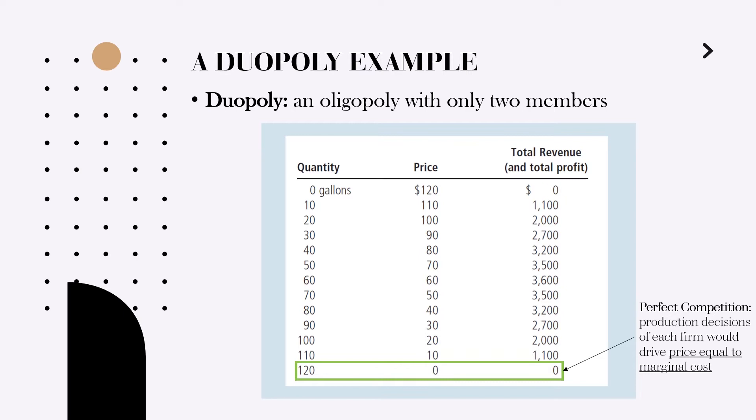In case of perfect competition, production decisions of each firm would drive price equal to marginal cost, and if the price is equal to marginal cost, the total economic profit of the company will be zero. Thus in our example, the equilibrium quantity for perfect competition will be 120 gallons and the price will be zero, because we assume there are no marginal costs of production of water.